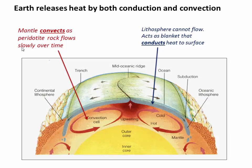Earth releases heat by both conduction and convection, and those take place in very different parts of Earth. Convection mostly occurs in Earth's mantle, where peridotite rock actually flows slowly over time — warm rock upwells and cold rock sinks down. However, capping Earth's mantle is the lithosphere. Because the lithosphere is so cold, the rock is essentially rigid, and that rigid rock acts as a blanket that insulates Earth's interior. Because it can't flow and hot rocks can't move towards the surface, heat needs to pass by conduction — from the base of the lithosphere up to the surface. So convection happens in the mantle and conduction happens across the lithosphere.